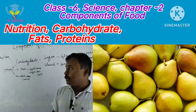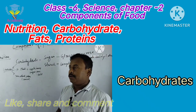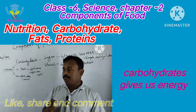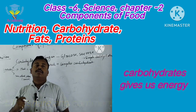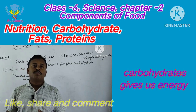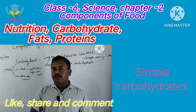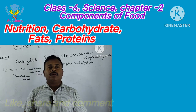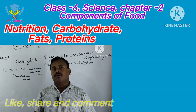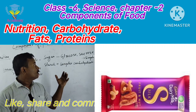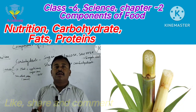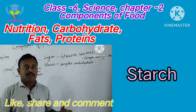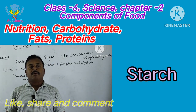Now, carbohydrate. Carbohydrate is an energy-giving food — it gives us energy to do work. There are two types of carbohydrate: simple carbohydrate and complex carbohydrate. Sugar — that is sucrose, fructose, maltose, glucose — these are simple carbohydrates. And starch is a complex carbohydrate.